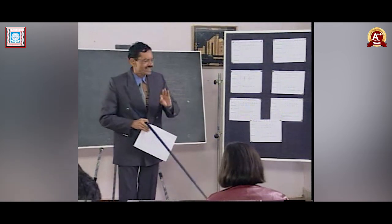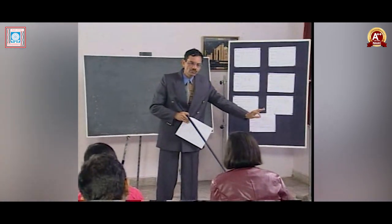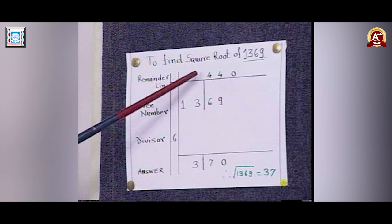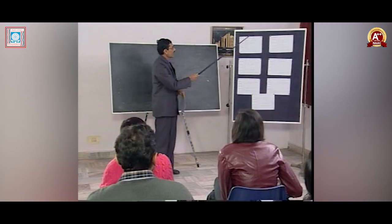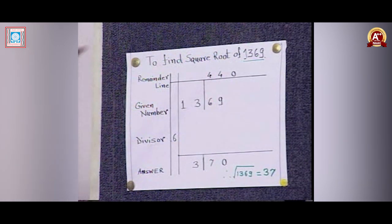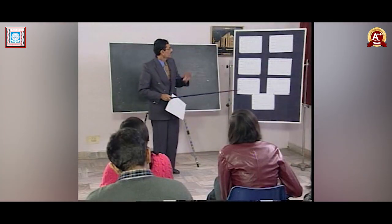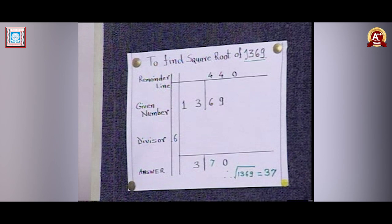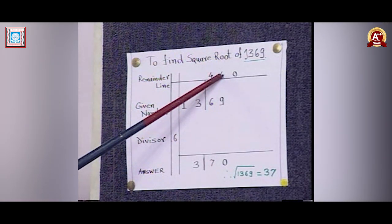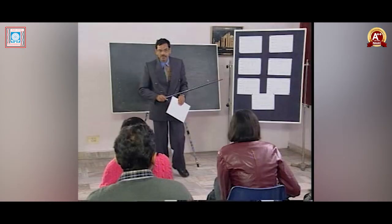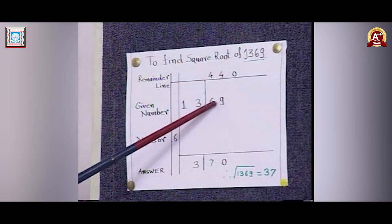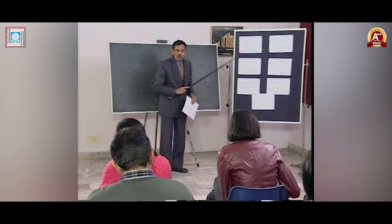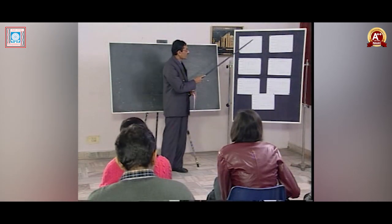We start dividing by 6. The next dividend will be 46 — remainder 4 and the next digit of the given number. 46 divided by 6 gives quotient 7, written in the answer line, and remainder 4 written in the remainder line. Then the next dividend is 49.